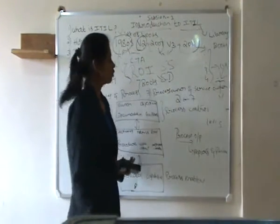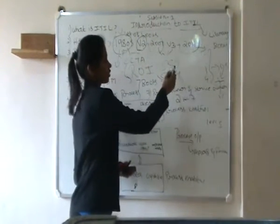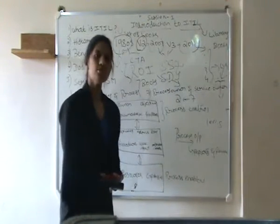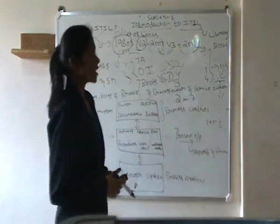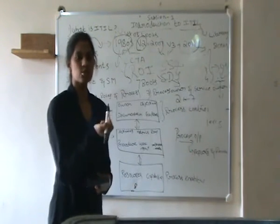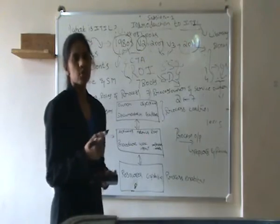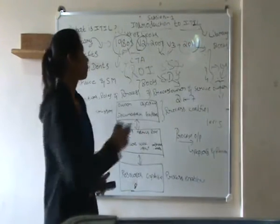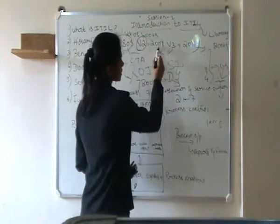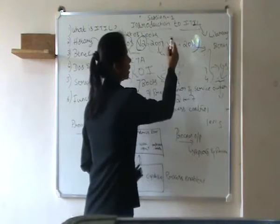So the version V2 had two books which used to support and which used to give the best practices for delivery. And as the time passes, the version has to change, the new improvements has to be written in those books for the upcoming service providers to adapt. The next version came into picture in 2007 called ITIL V3.